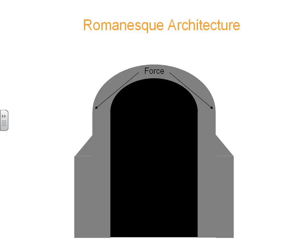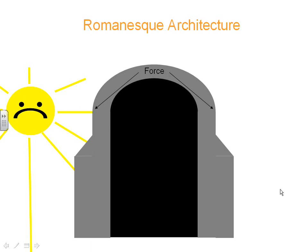However, because of these thick walls, you can't put windows down there. The sun can't get in — the only place you're going to have windows is right up at the top. So it's really easy to identify Romanesque architecture because it looks like a fortress: it has thick walls, rounded arches, and most of its windows are going to be up at the top near the roof. It may have small windows along the bottom, but that's about it.